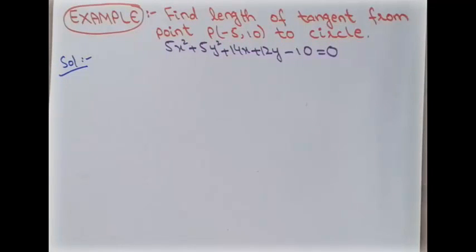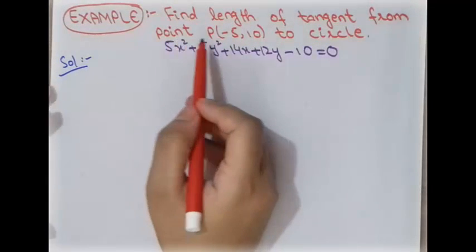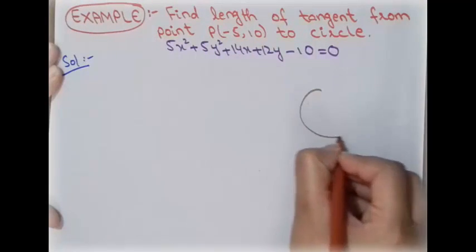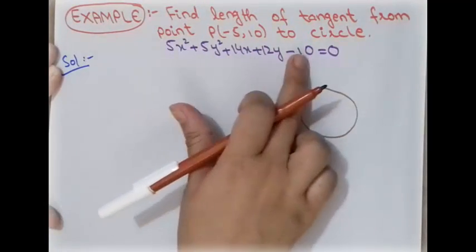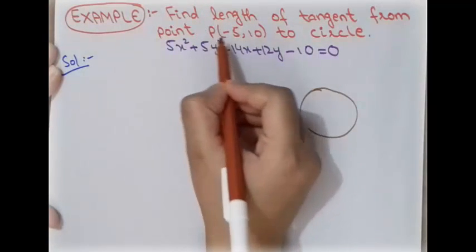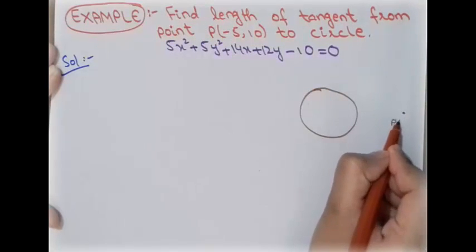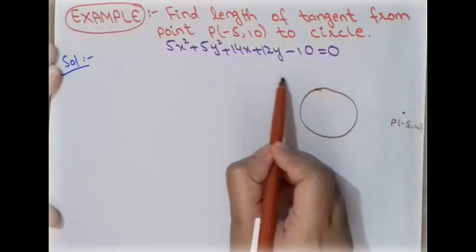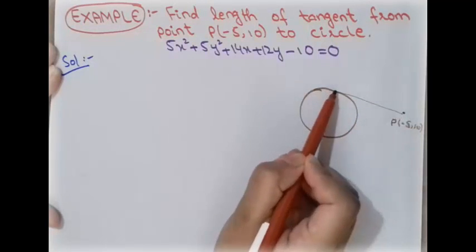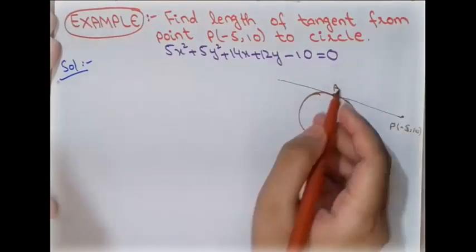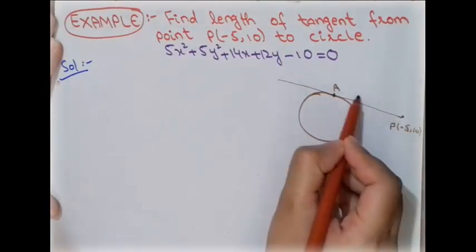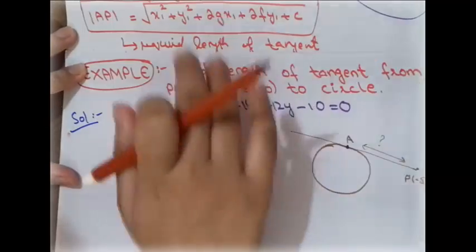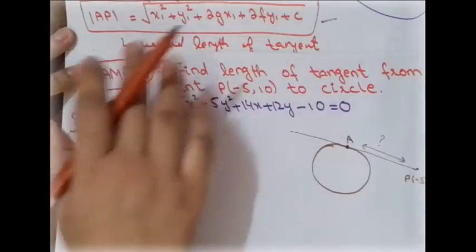Here is an example: find the length of a tangent from the external point (−5, 10) to a circle whose equation is given. The equation of the circle is given, and the external point is placed at (−5, 10). We need to find the length AP — the distance between the external point and the point of tangency — using the formula we derived.